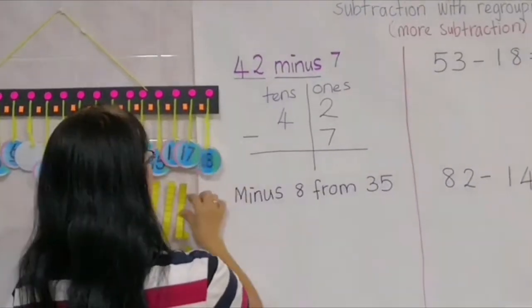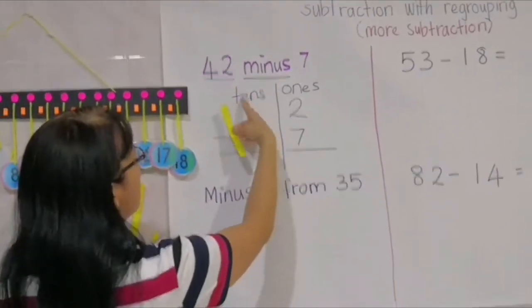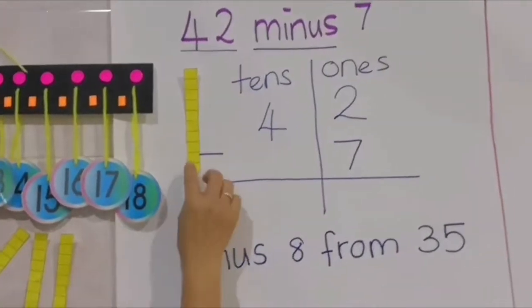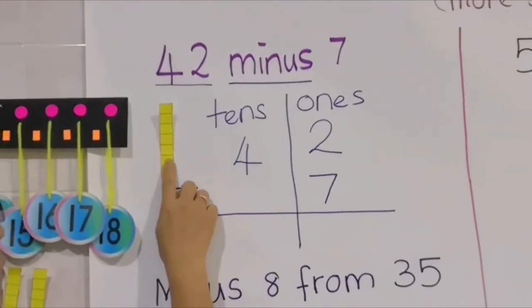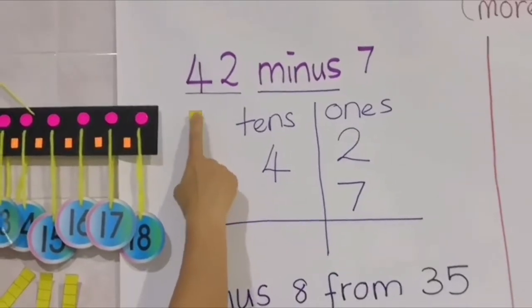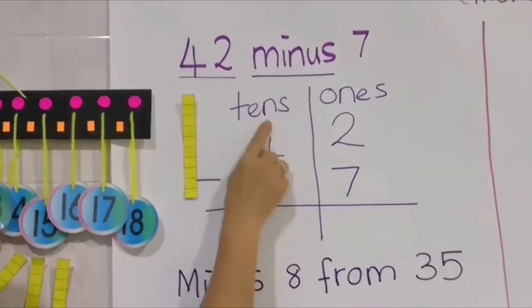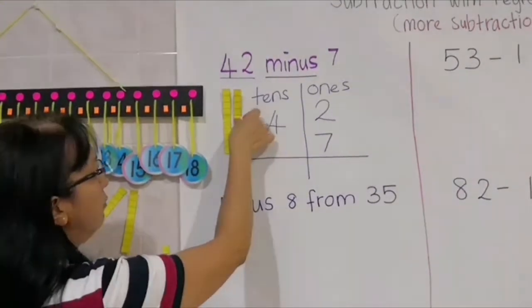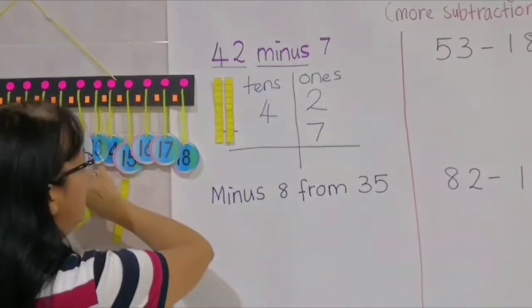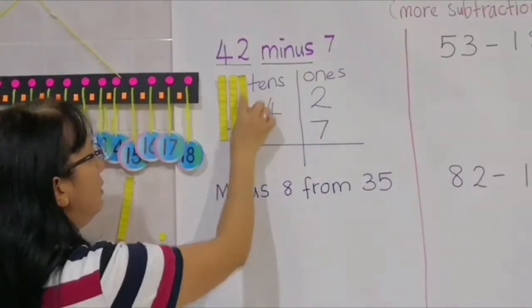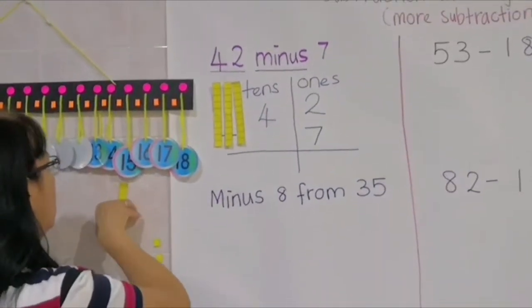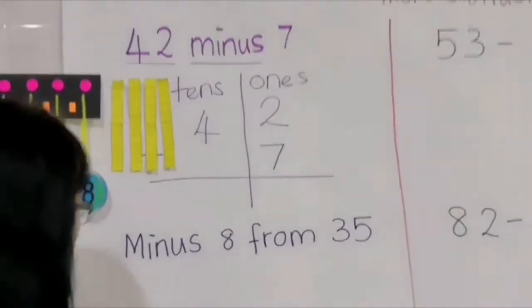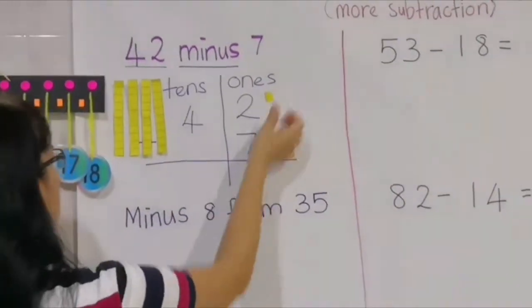We can represent 4 in place value tens — that means we have 4 base-ten blocks. Counting: 1, 2, 3, 4, 5, 6, 7, 8, 9, 10 — this represents place value ten. How many tens do we have? We have 4 tens, because the digit is 4. So we have 4 tens and 2 ones.